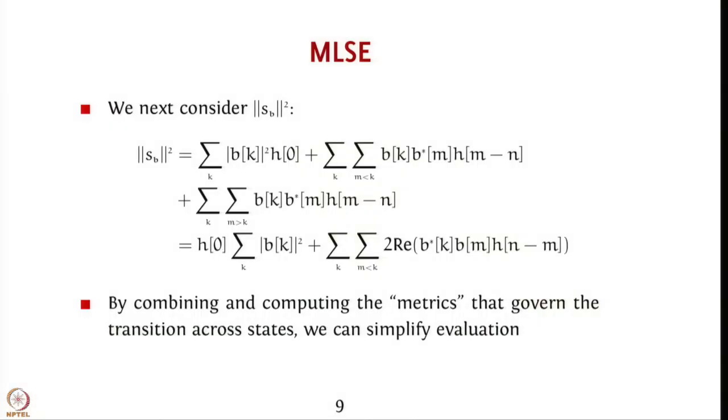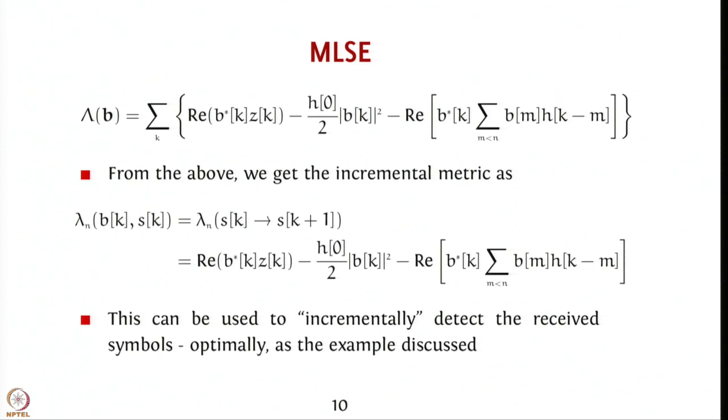To summarize: we split the real part of angle bracket y, s_b and norm s_b squared into convenient parts, and used them to derive an additive metric. This additive metric allows us to incrementally detect received symbols optimally. In the next class, we will cover the Viterbi algorithm and work through an example so that the implementation becomes clear. Thank you.